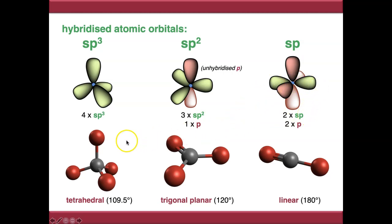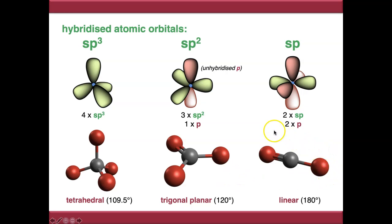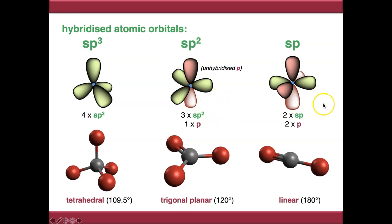This gives us our relevant molecular geometries: tetrahedral in the case of sp3, trigonal planar for sp2, and linear for sp. Now if we've got sp2 or sp hybridized atoms, we've also got a number of unhybridized p orbitals left over, shown in red here. So we've either got one or two p orbitals, and we'll be using those later in this video.